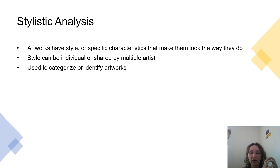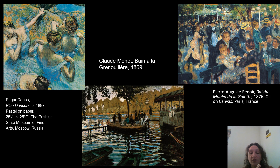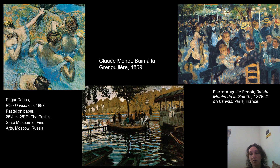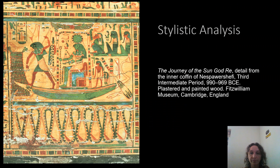Next is stylistic analysis — a kind of grouping. When you use stylistic analysis, you're thinking about artworks in groups that share specific characteristics, whether with an individual artist, multiple artists, or an entire culture. A good example is Impressionism. In the late 1800s there was a massive artist movement with a different way of painting and looking at light. We group them together because they share stylistic characteristics in how they approached art and painting.